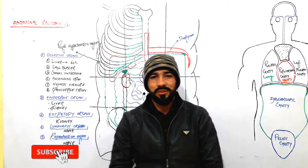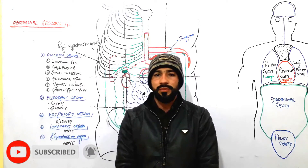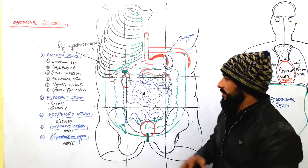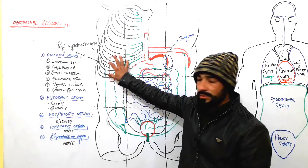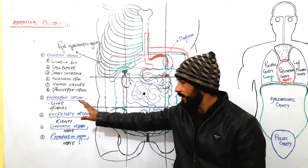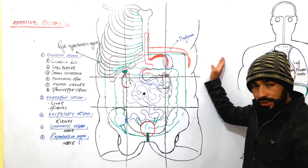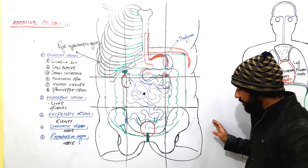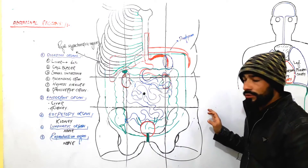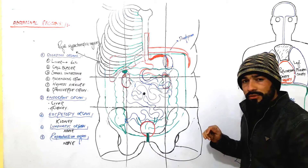Hello my dear friends, Assalamu Alaikum and welcome back to this lesson. As we are discussing the abdominal regions, in the previous two lectures I recorded about the organs present in the right hypochondric region and the left hypochondric region. If you want to know about those, you can go and watch those lectures — I will give the links in the description of this video.